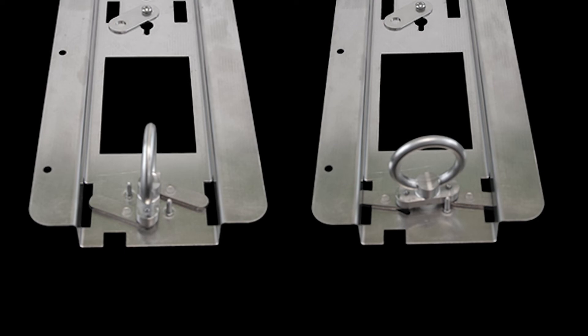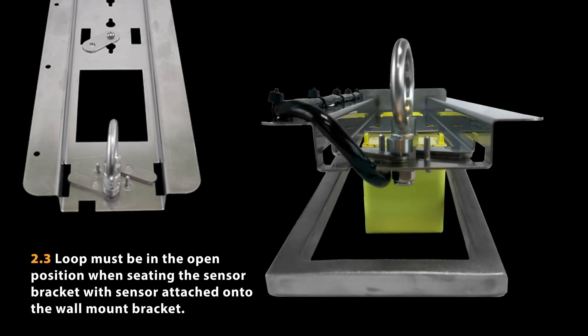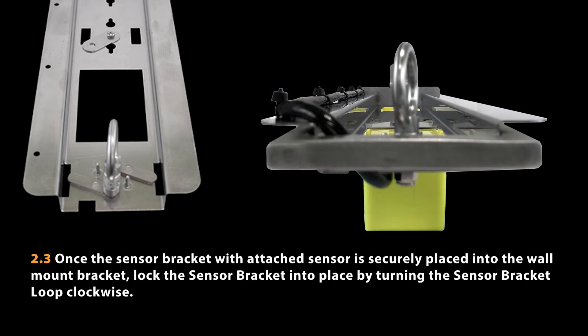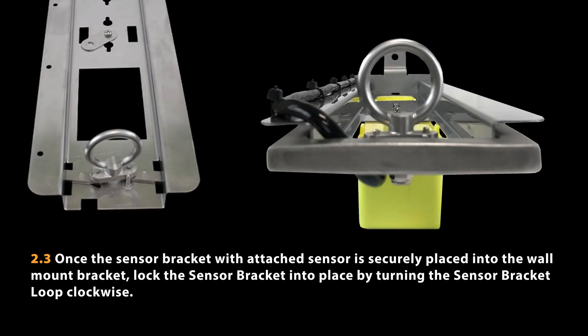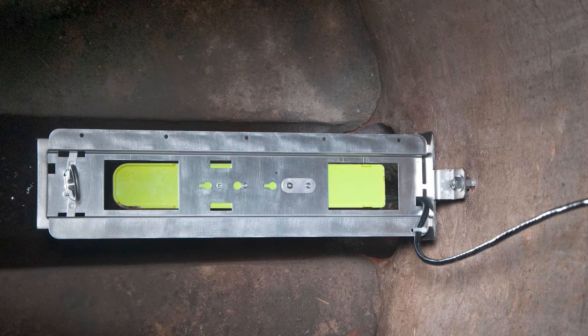The loop on the sensor bracket has two positions: opened and closed. The loop must be in the open position when seating the sensor bracket with sensor attached onto the wall mount bracket. Once the sensor is attached and cable tied to the bracket, lock the sensor bracket into place by turning the sensor bracket loop clockwise. The sensor is now securely installed on the manhole wall.